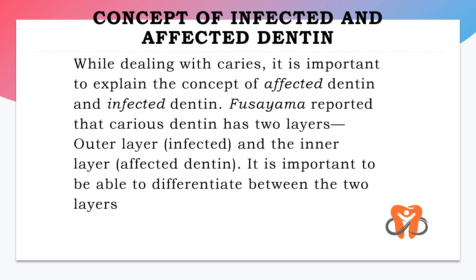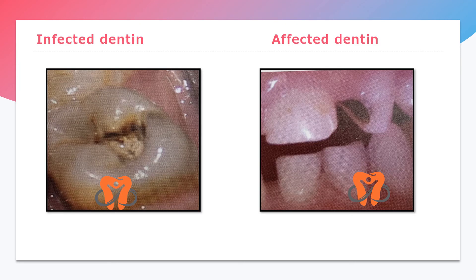It is important to understand the concept of infected and affected dentine, a concept given by Fusayama. He reported that carious dentine has two layers: the outer layer — infected — and the inner layer — affected. Infected dentine appears yellowish-white in color and soft in consistency, so it can be easily removed. Affected dentine appears dark in color and hard in consistency, and is therefore difficult to remove. Microscopically, the affected dentine area contains very little or no bacteria.